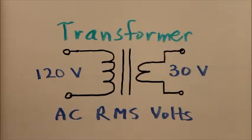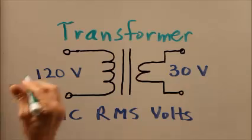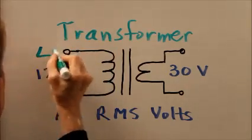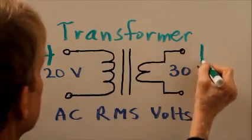In any AC transformer, the voltage ratio is the same as the turns ratio, so the turns ratio here is four to one.